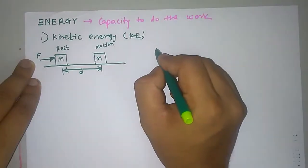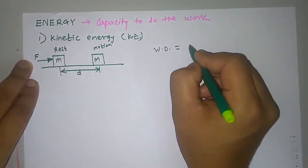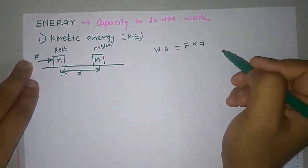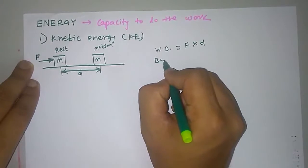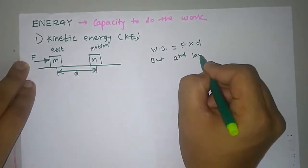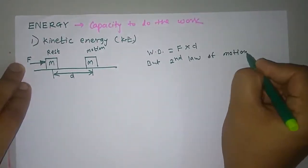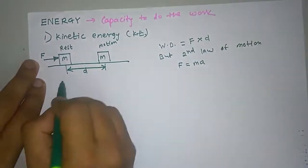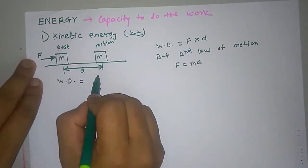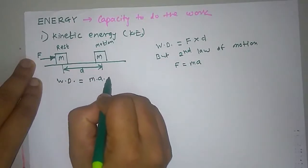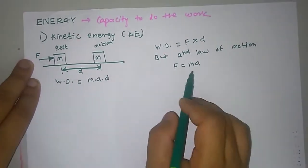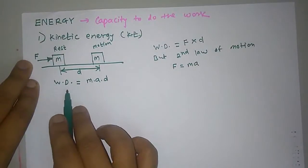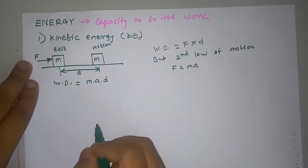We need to find the work done or energy transferred. The formula for work done is force into displacement. By Newton's second law of motion, F equals MA. So work done equals M times A times D.